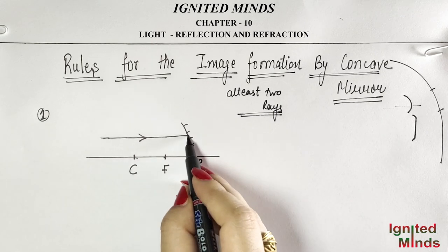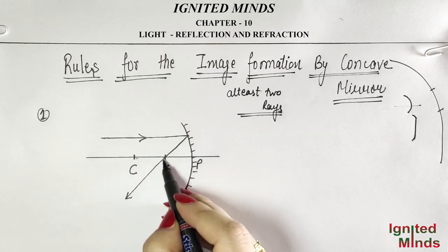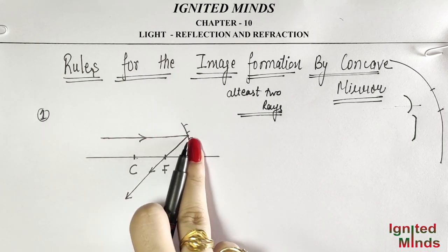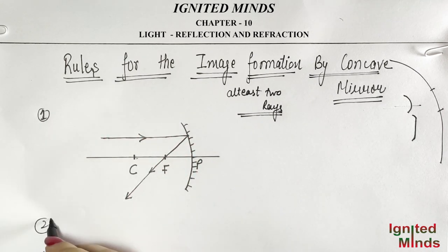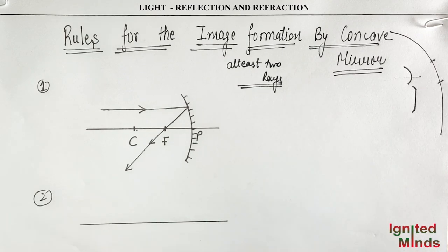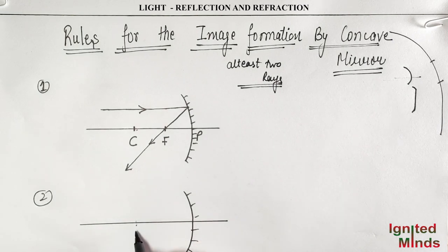After reflecting back from the focus — if the ray is parallel to the principle axis, then it will go to focus. So this is the concave mirror, this is the center of curvature, and this is the focus.